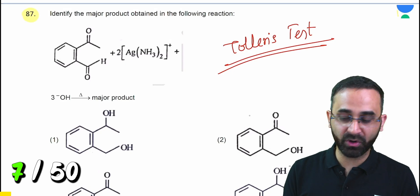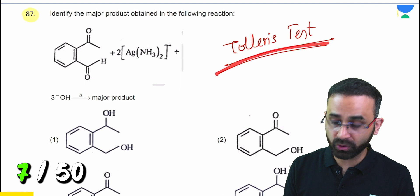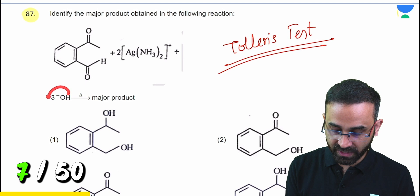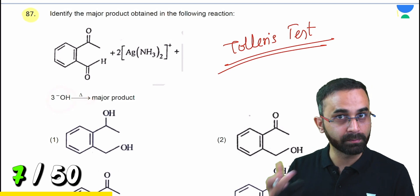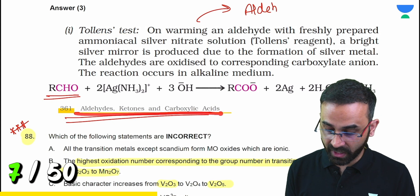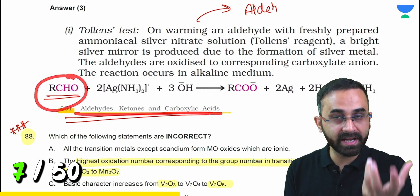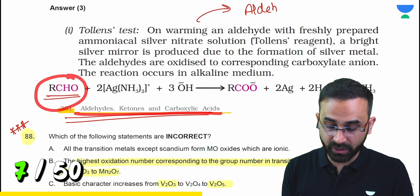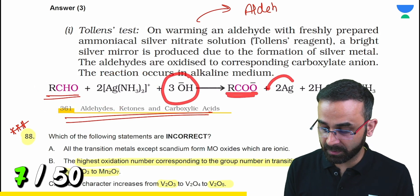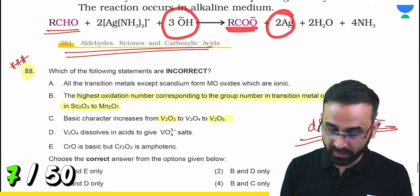This question from carbonyl compounds based on Tollen's test. Look at the stoichiometry: organic compound plus 2 molecules of Tollen's reagent plus 3 OH⁻. On heating, what's the major product? Tollen's test, page 361, aldehydes, ketones and carboxylic acids: RCHO plus 2 Tollen's plus 3 OH⁻ gives RCO⁻ plus 2 Ag. Directly from NCERT.